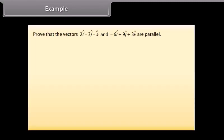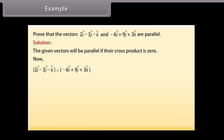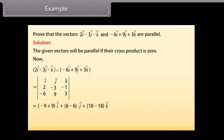Example: Prove that the vectors 2 cap I − 3 cap J − cap K and −6 cap I + 9 cap J + 3 cap K are parallel. Solution: The given vectors will be parallel if their cross product is 0. Now, (2 cap I − 3 cap J − cap K) × (−6 cap I + 9 cap J + 3 cap K) equals the determinant with first row cap I, cap J, cap K; second row 2, −3, −1; third row −6, 9, 3. This gives (−9 + 9) cap I + (6 − 6) cap J + (18 − 18) cap K = 0. Hence proved.